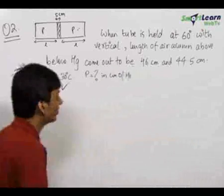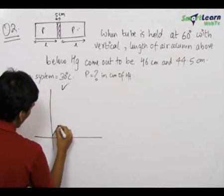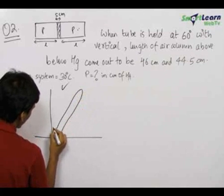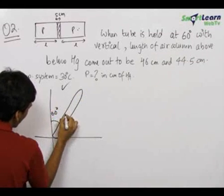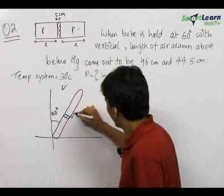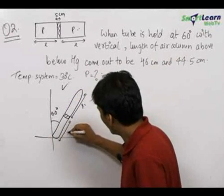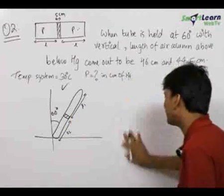So for solving this question, let us first draw the diagram. When the tube is held at angle 60 degrees with the vertical, there is a mercury column here. Let this length be L1 and this length be L2. This is already 5 centimeters as we already know.